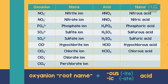For the chlorate ion, the formula of the acid would be HClO₃, and its name is chloric acid. For the perchlorate ion, the formula of the acid would be HClO₄, and its name is perchloric acid.